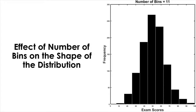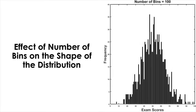Before we talk about normal distribution in more detail, let's step back to the visualization of data and talk a little bit more about the shape of a distribution. Here is the histogram of hypothetical exam scores we have seen before. Let's imagine that we have millions of data to plot a histogram. In general, if you have a large data set, then it's better to divide the entire range into smaller bins. For example, here we have a histogram of the exam scores with 11 bins. Now let's increase the number of bins to 100 and see what it looks like.